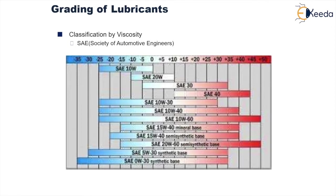The number to the left of W indicates the lowest temperature at which the oil will be usable, and the number to the right indicates the highest temperature range under which the oil will be used. If there is only a left-side number, the oil is suitable for cold conditions. If the number is only on the right side, the oil is suitable only for hot conditions. When numbers are present on both sides, it indicates the lubricant has the ability to be used across a greater temperature range.